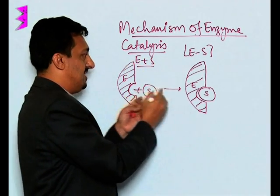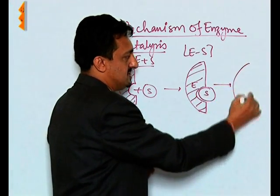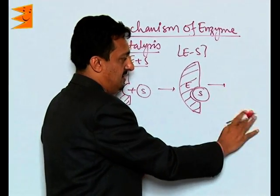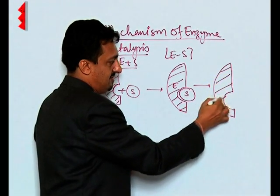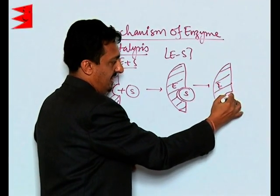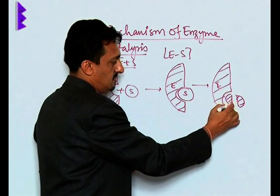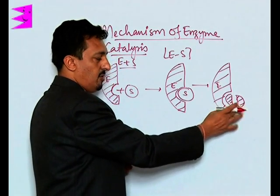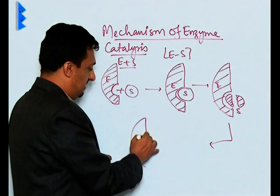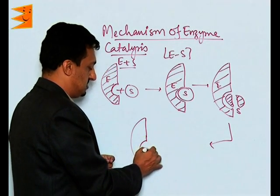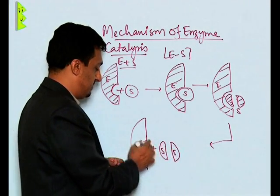The enzyme and substrate come closer, their complex is formed, enzyme activity takes place, and then the enzyme breaks down the substrate into its required product. You can see now the substrate is being broken down into two pieces. Then the product leaves the surface of the enzyme, freeing it for further adsorption.